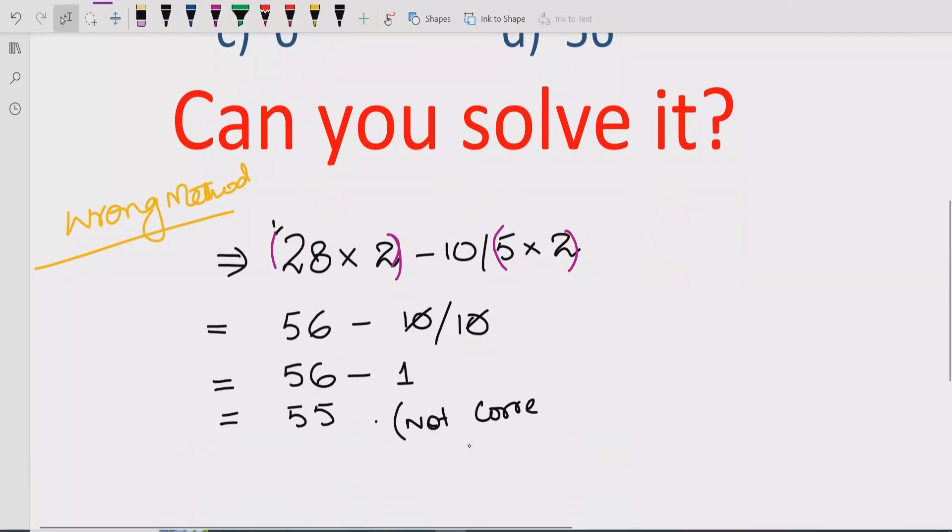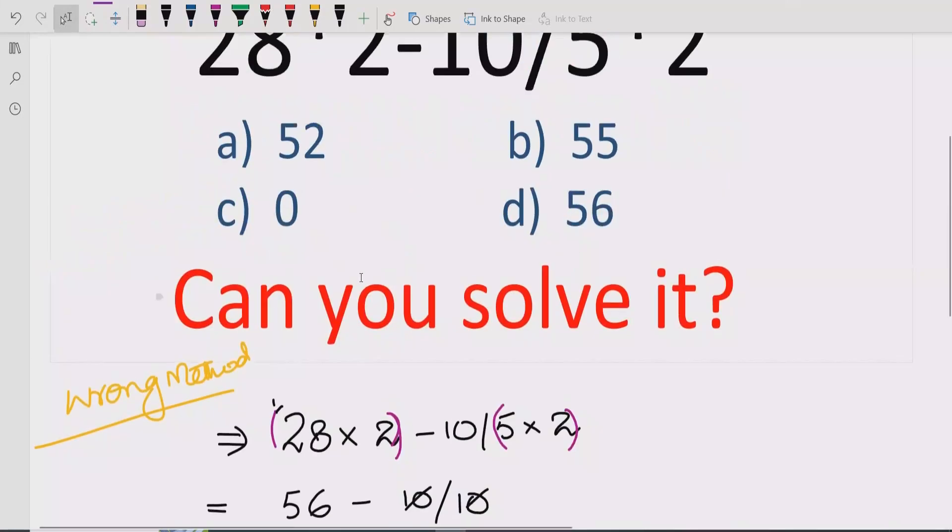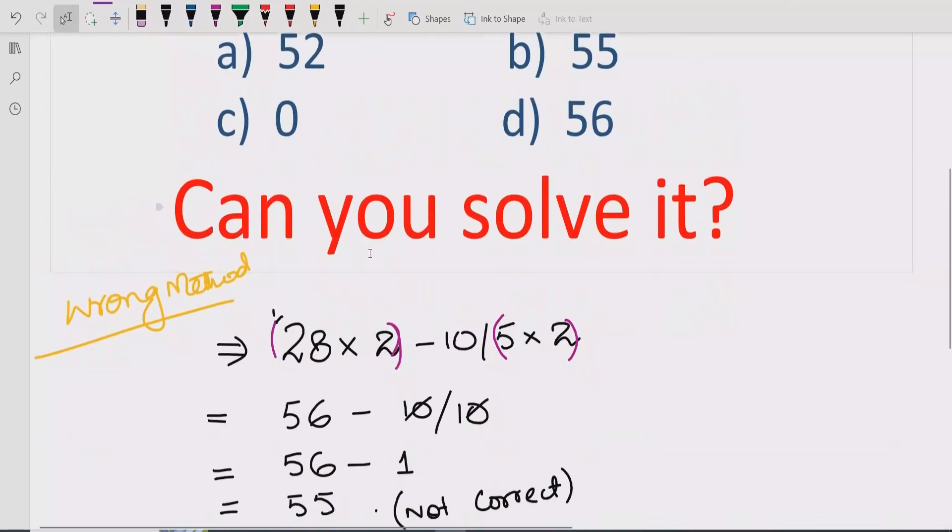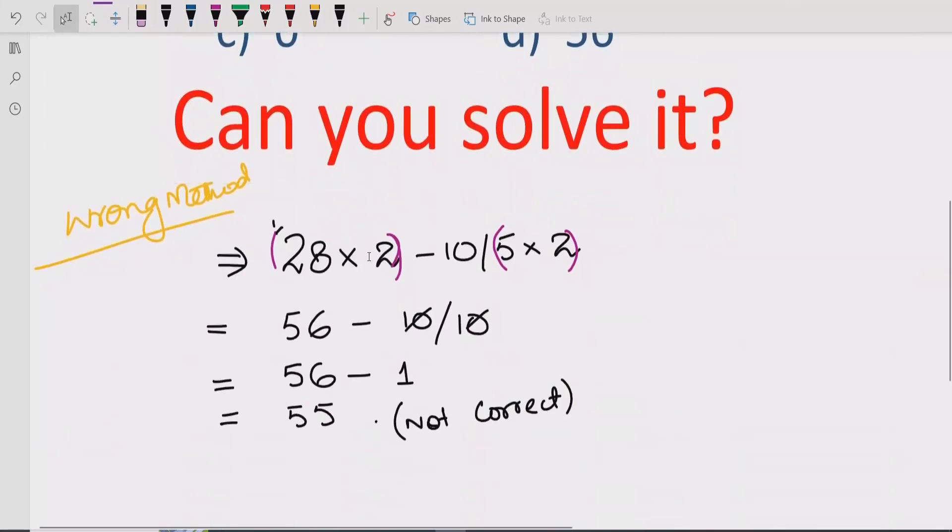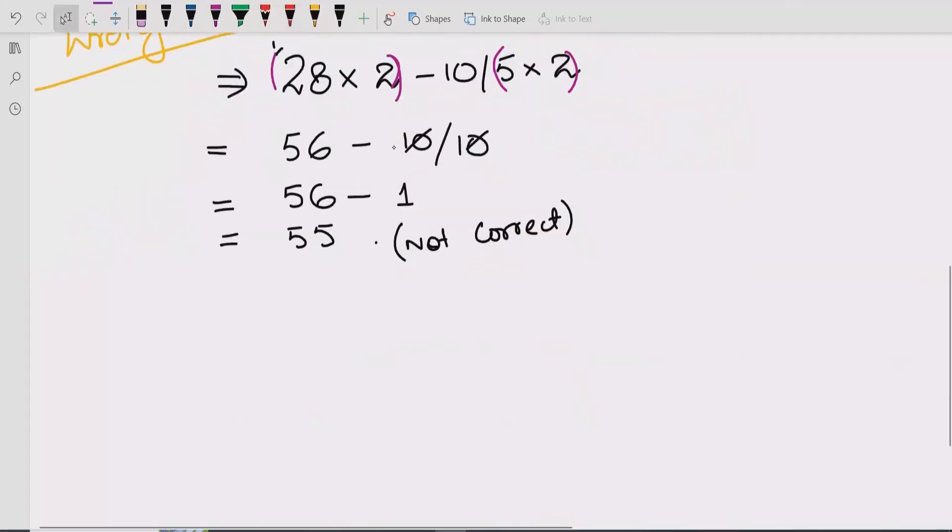I will show you what is the correct answer and how you can solve it. Now we will go for the correct method. First we will write the question: 28 multiplied by 2 minus 10 divided by 5 multiplied by 2.